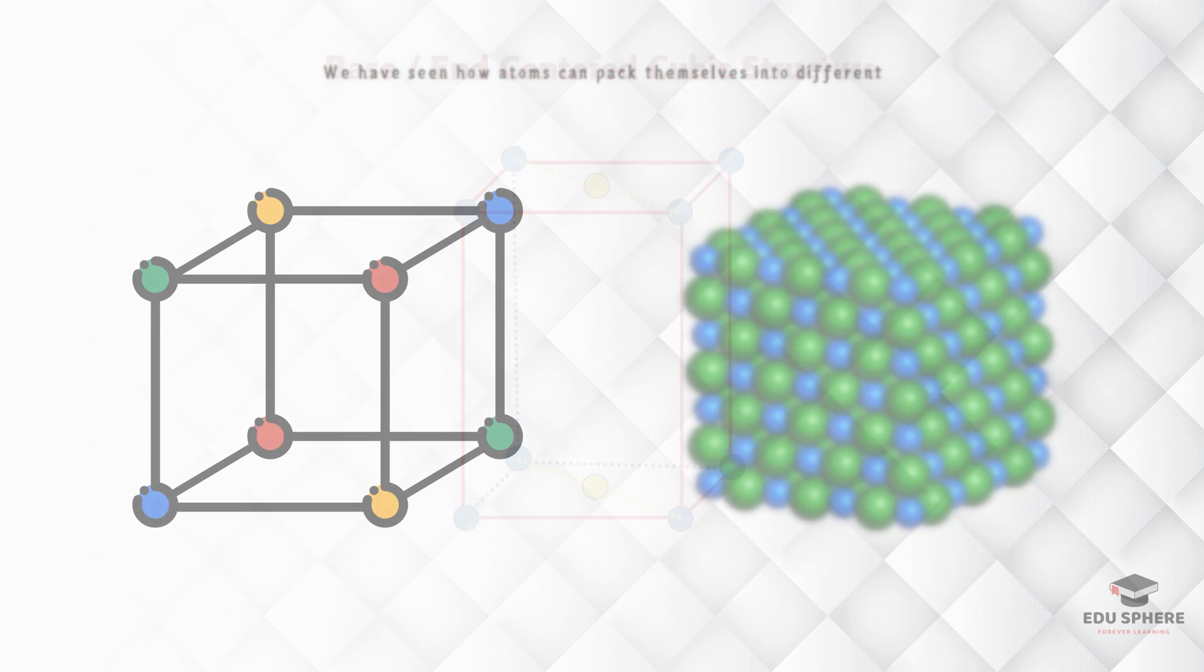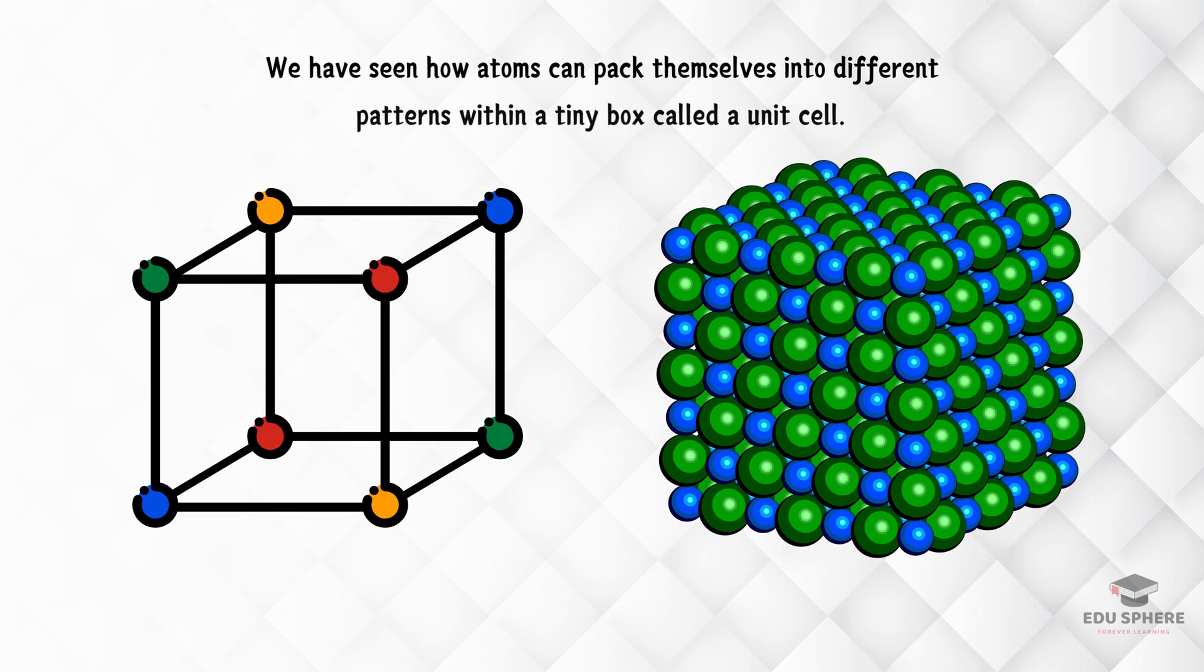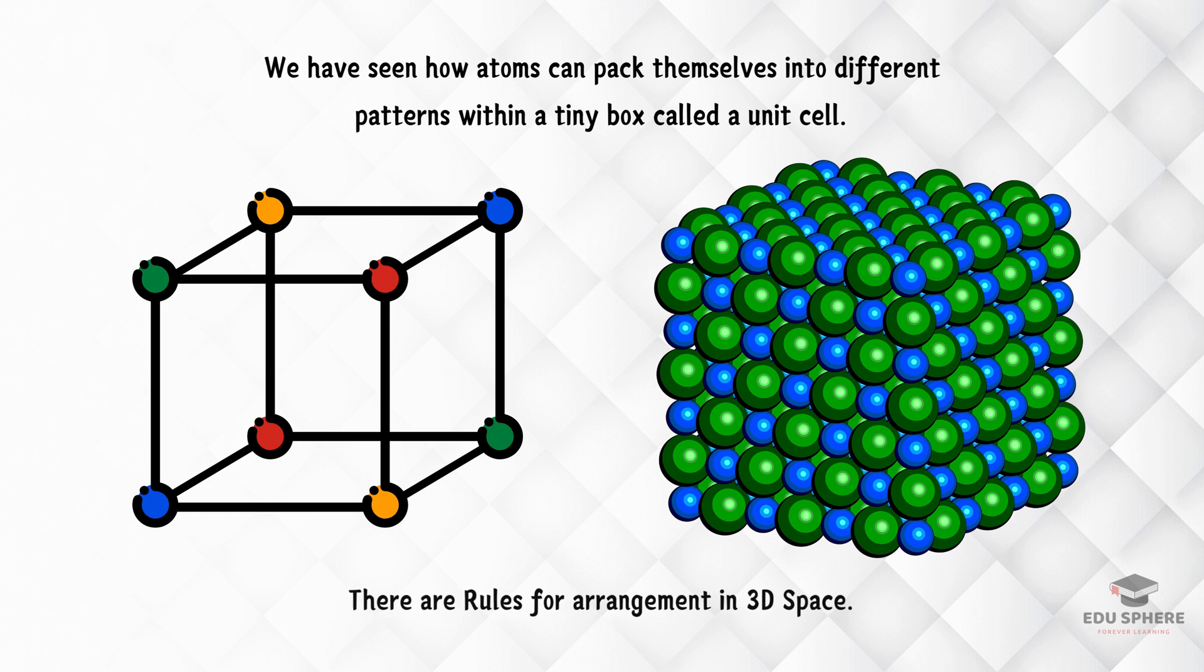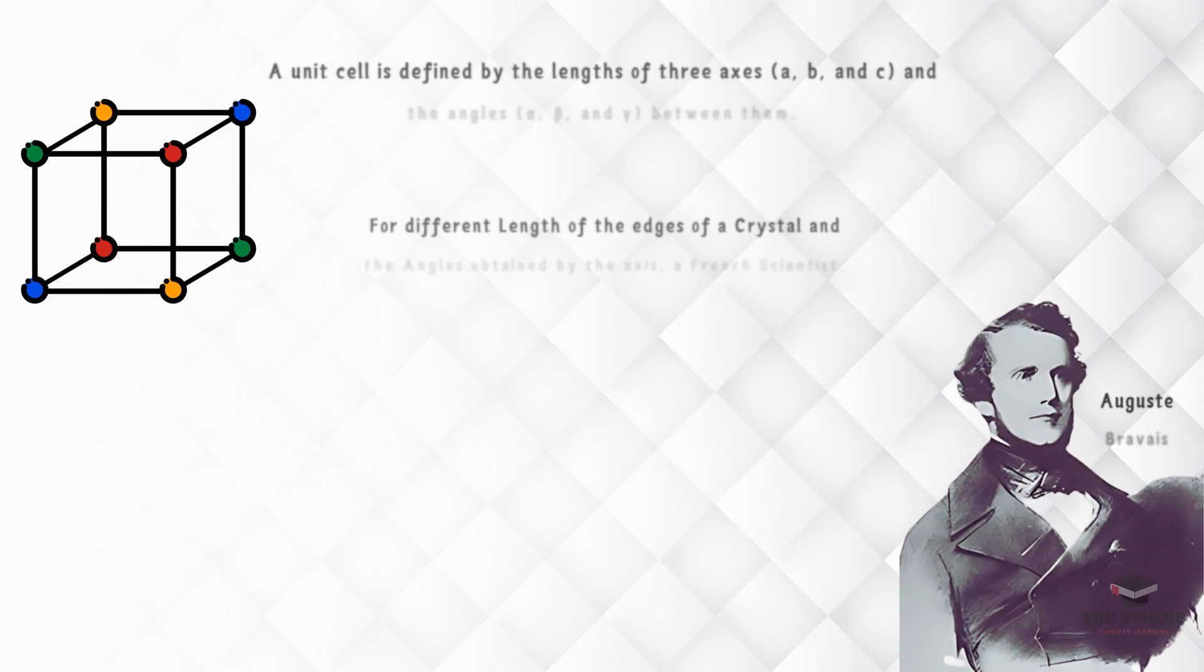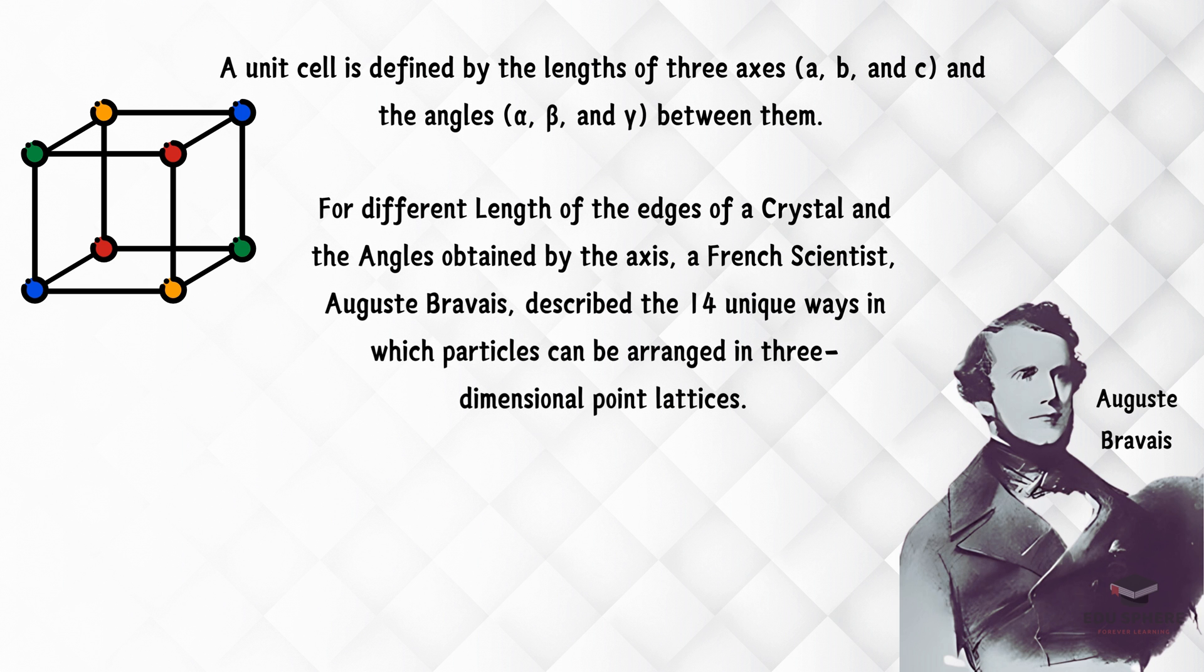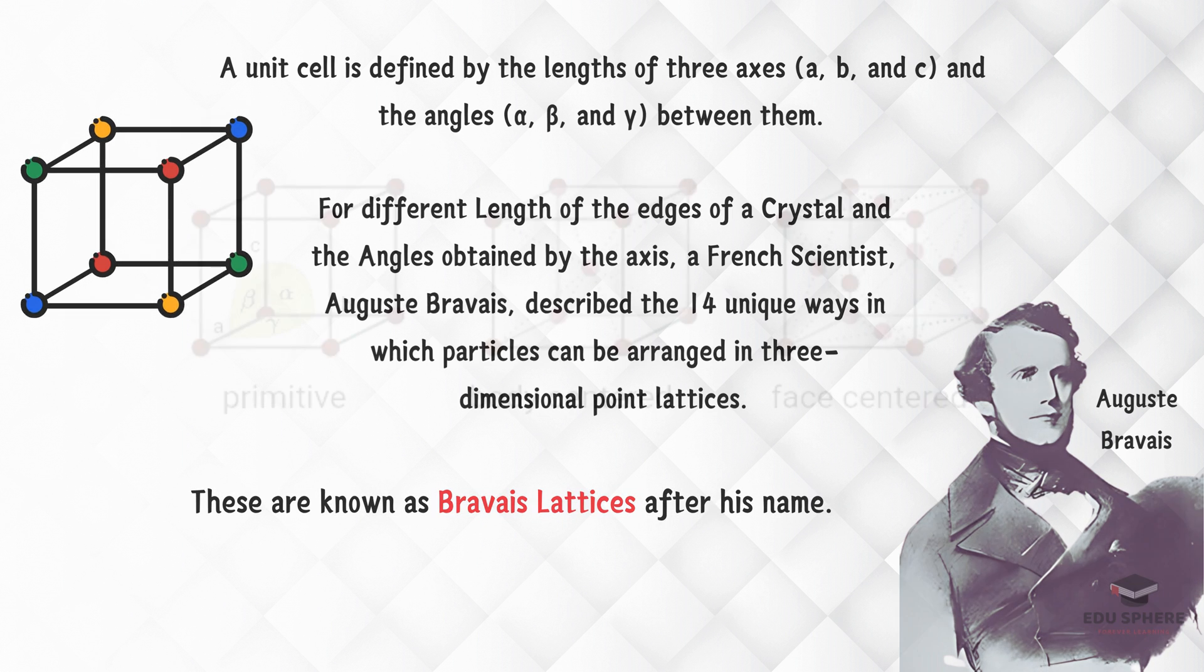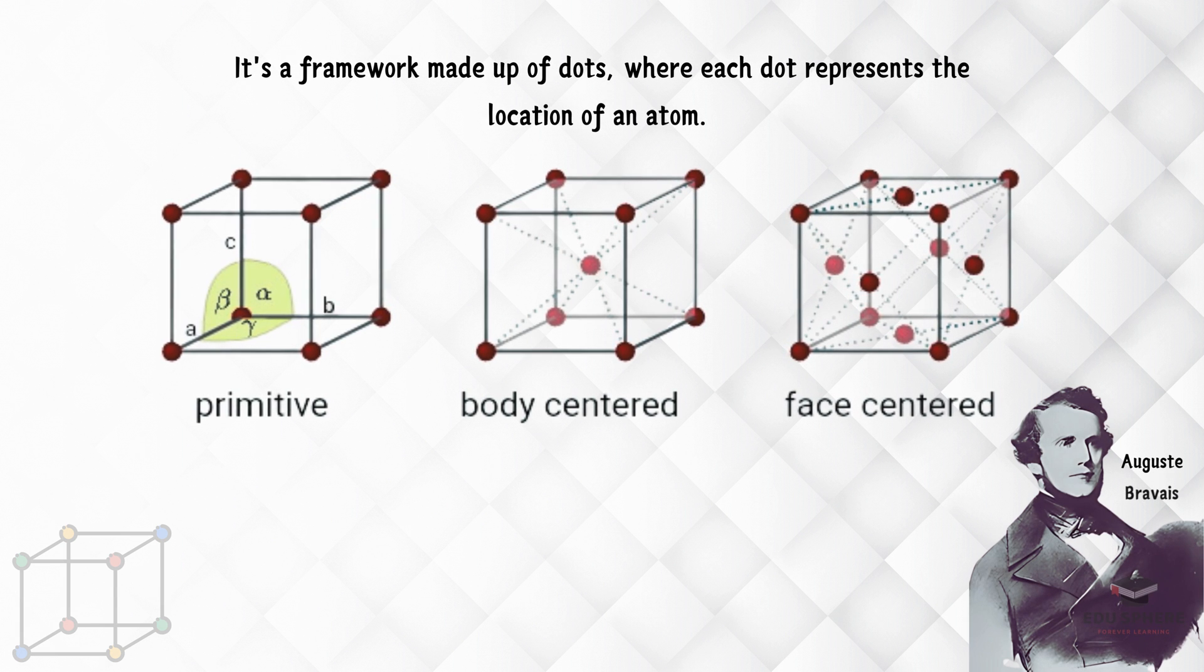So far, we've seen how atoms can pack themselves into different patterns within a tiny box called a unit cell. But did you know there are specific rules for how these unit cells can be arranged in 3D space? A French scientist named August Bravais figured out there are 14 unique ways to arrange these unit cells, like building blocks. These are called Bravais lattices. Think of them as frameworks made of dots, where each dot represents an atom's location. These act as blueprints for different crystal structures.